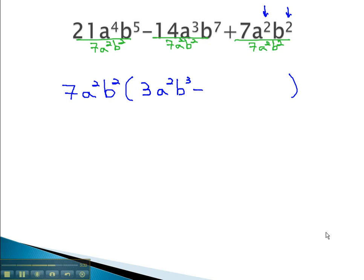Minus 14 over 7 gives us 2. Subtracting exponents leaves us with a b to the 5th. Plus 7 over 7 is 1, and the a's and b's divide out completely.